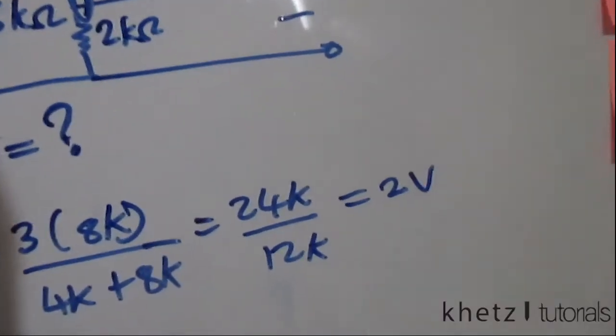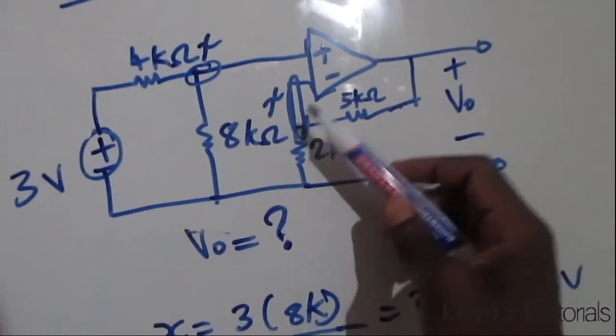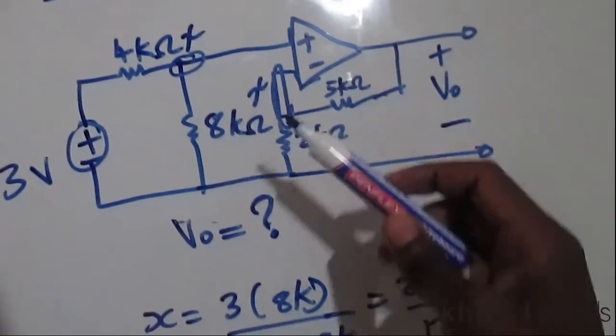So this 2 volts is also the same at the other terminal because the terminal voltages are equal.